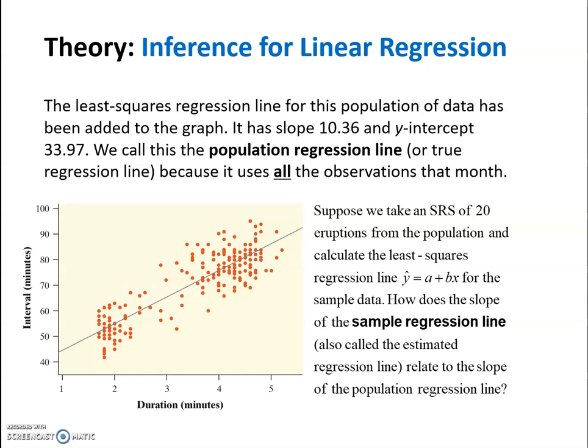Suppose we were to take a simple random sample of 20 eruptions from the population and calculate the least squares regression line ŷ equals a plus bx for the sample data. I'm pretty sure this data has to do with that geyser, that famous geyser, Old Faithful. The length of the duration and then the interval between.